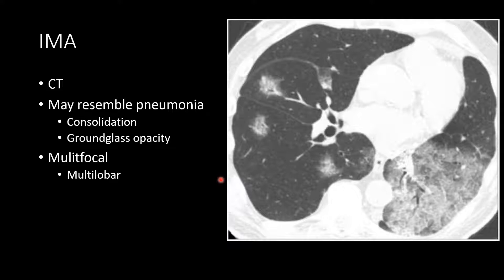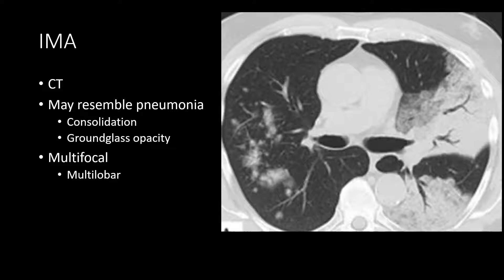This is why it's important to get follow-up imaging in patients with an area of consolidation in the lung, particularly if they don't have symptoms corresponding to a pneumonia. Another example of invasive mucinous adenocarcinoma shows multi-lobar areas of ground glass opacity and consolidation with intermixed air bronchograms — an appearance that would be very difficult to differentiate from a multi-lobar pneumonia — with additional consolidation, ground glass, and subsolid pulmonary nodules in the contralateral lung.